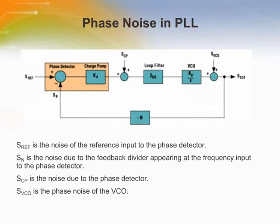The figure shows the main phase noise contributors in a Phase Locked Loop. SREF is the noise appearing on the reference input to the Phase Detector, dependent on the reference divider circuitry and the spectral purity of the main reference signal. S-N is the noise due to the feedback divider at the frequency input to the Phase Detector. S-CP is the noise due to the Phase Detector, and S-VCO is the phase noise of the VCO. The overall phase noise at the output is added in an RMS fashion to give the total noise of the system.